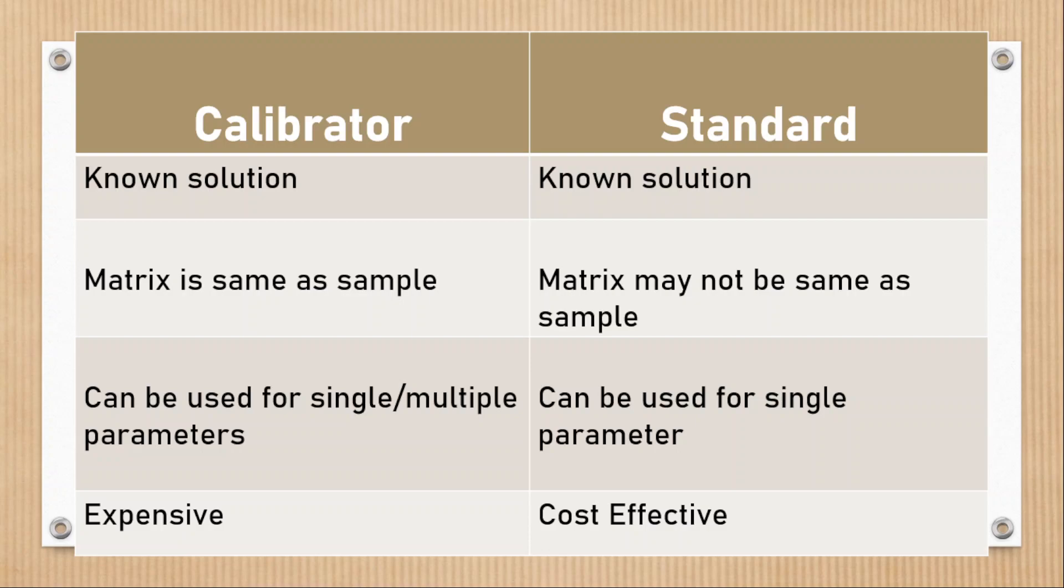In market, we can have calibrator for both single and multiple parameter. Standard is available for only single parameter. Calibrator is expensive because it should be made in same matrix, whereas standard is cost effective because it can be made in water also.